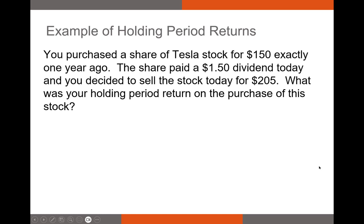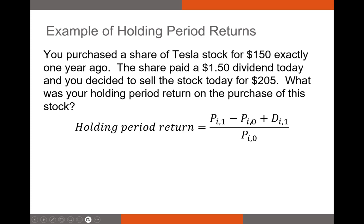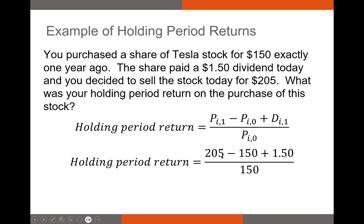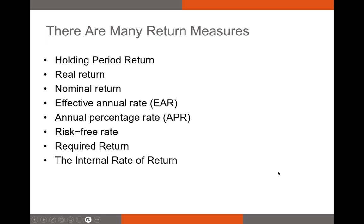Now let's use the holding period return formula. You purchased a share of Tesla stock for $150 exactly one year ago. The share paid a $1.50 dividend today, and you're selling the stock for $205. Price at end minus price at beginning plus dividend, divided by price at beginning: the holding period return is 37.67%.